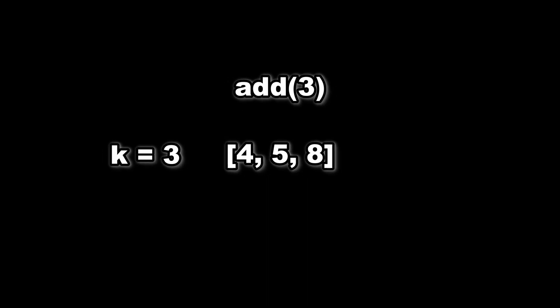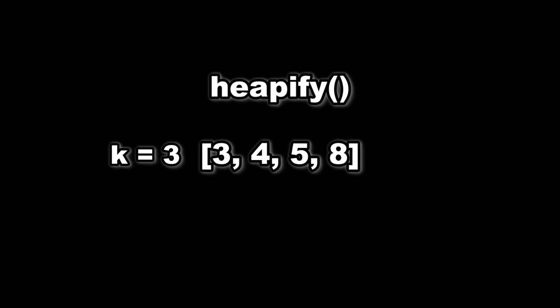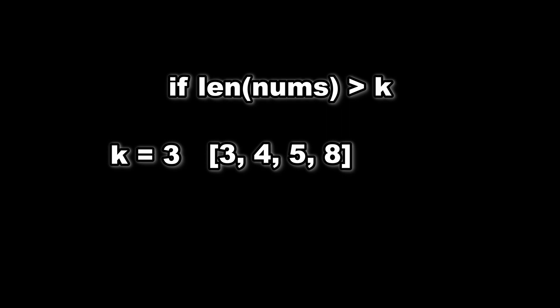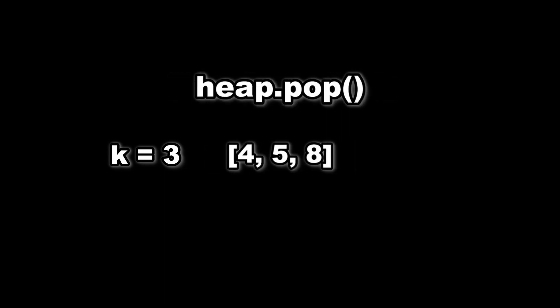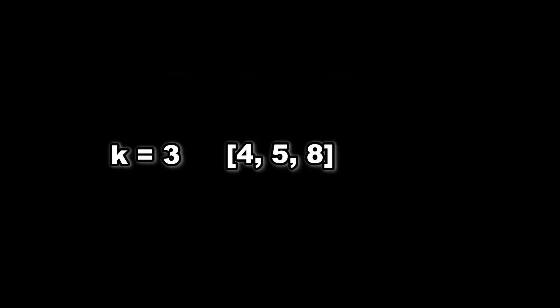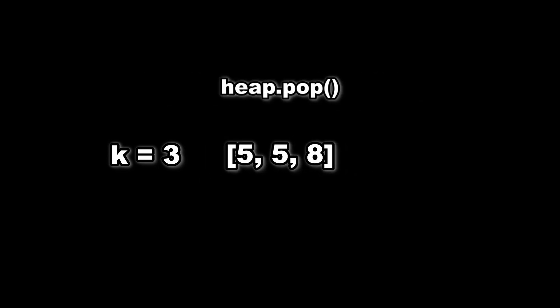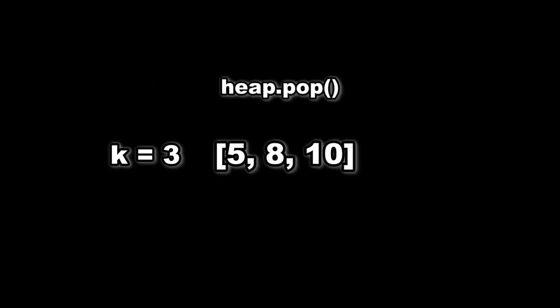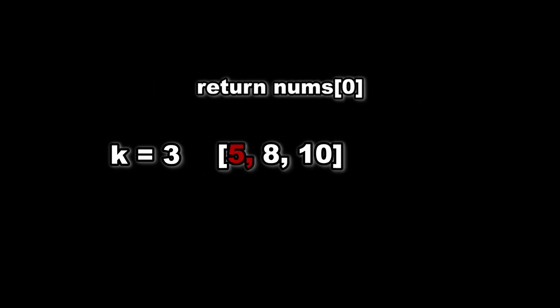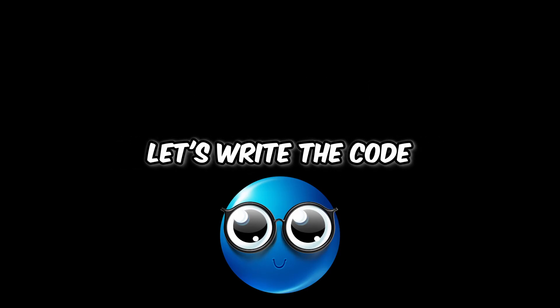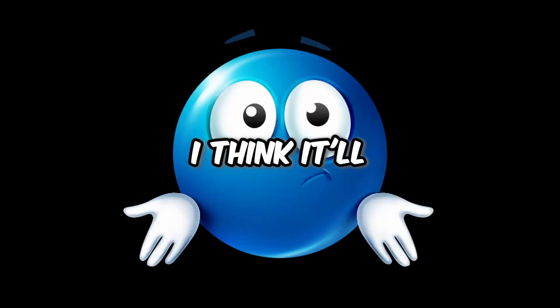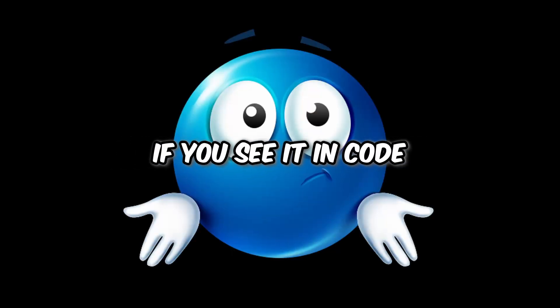In the add method, every single time we add a new number, we check if the size of the heap is greater than k. If it is, we pop a number out while maintaining the heap property. Since if we maintain the heap property, every time we access the first element of our heap, it's still going to be the kth largest element. Let's write the code for this — it'll make more sense when you see it.